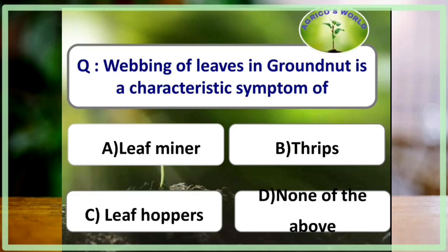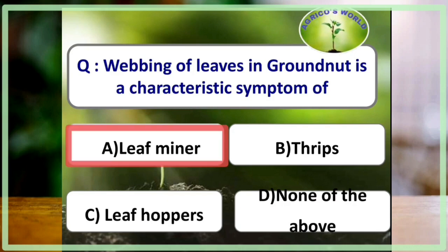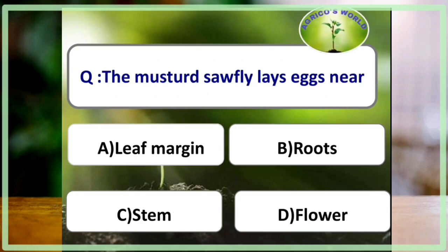Webbing of leaves in groundnut is a characteristic symptom of leaf miner Aproaerema modicella. It is a major pest of groundnut. The larvae web together the adjacent leaflets and feed on the tissue.